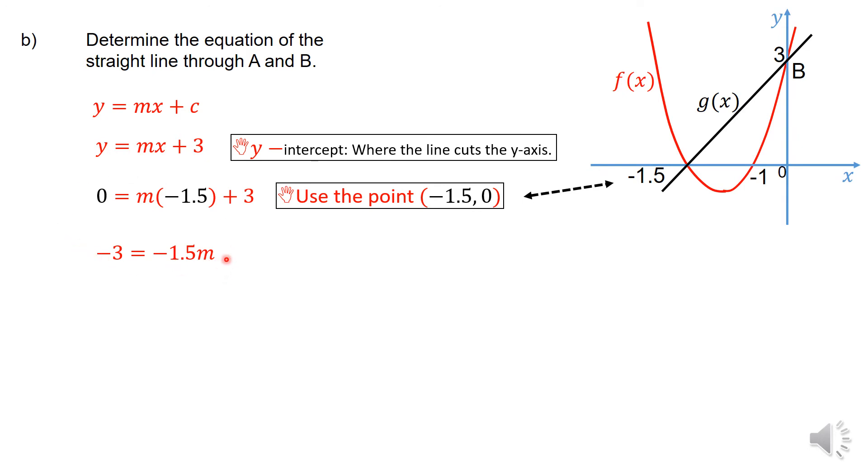Which then -1.5m is equal to -3, so you then divide throughout by -1.5. You should get that the gradient is equal to 2. And since the gradient is equal to 2, now we can complete this equation of the straight line: y = 2x + 3.